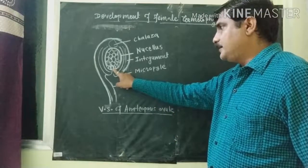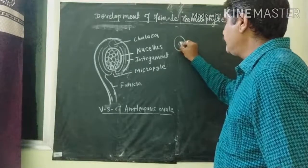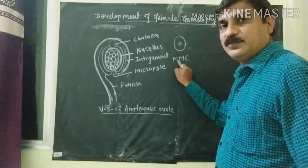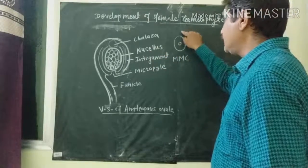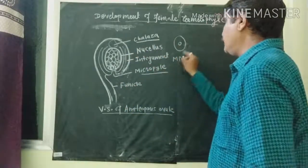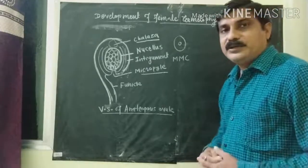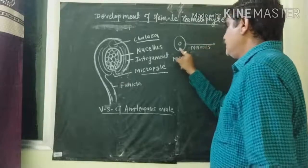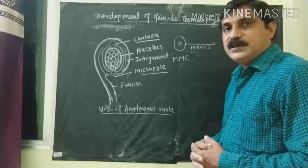The megaspore mother cell, present in the nucellus of the ovule, is known as MMC — megaspore mother cell. The chalazal end is here and the micropylar end is here, and the megaspore mother cell is located here. This megaspore mother cell first undergoes meiosis division, known as the reduction division.